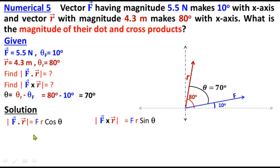Starting the solution, first taking dot product: F value is 5.5, r is 4.3, and cos theta is cos 70 degrees. The value of cos 70 from calculator is 0.342.